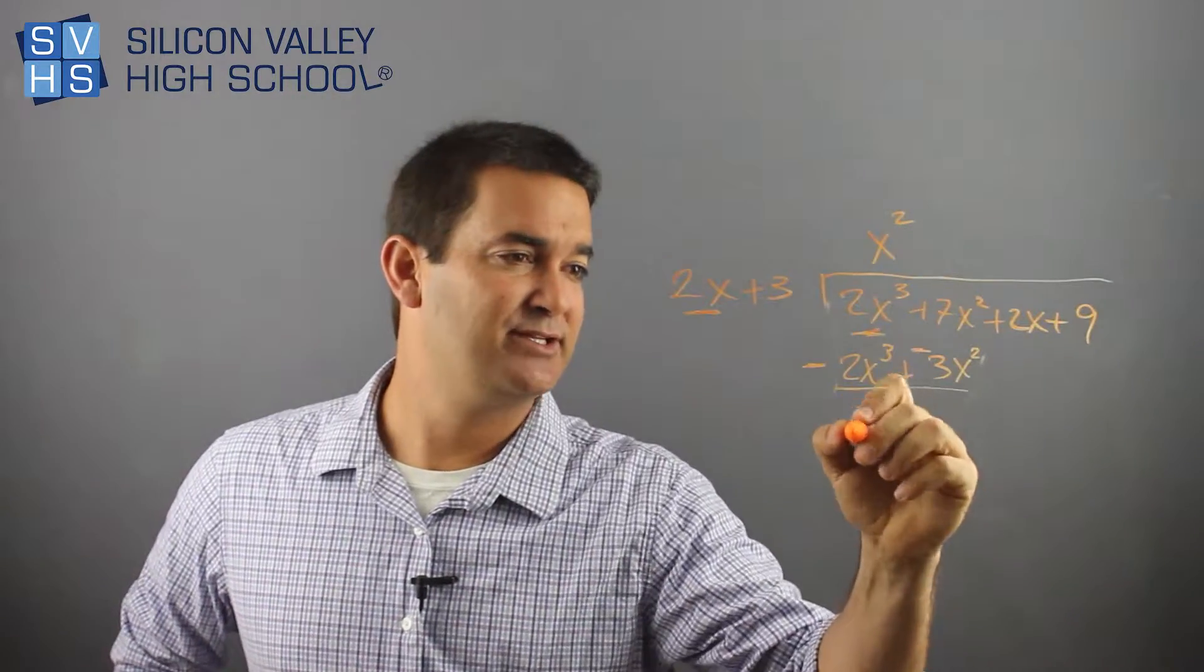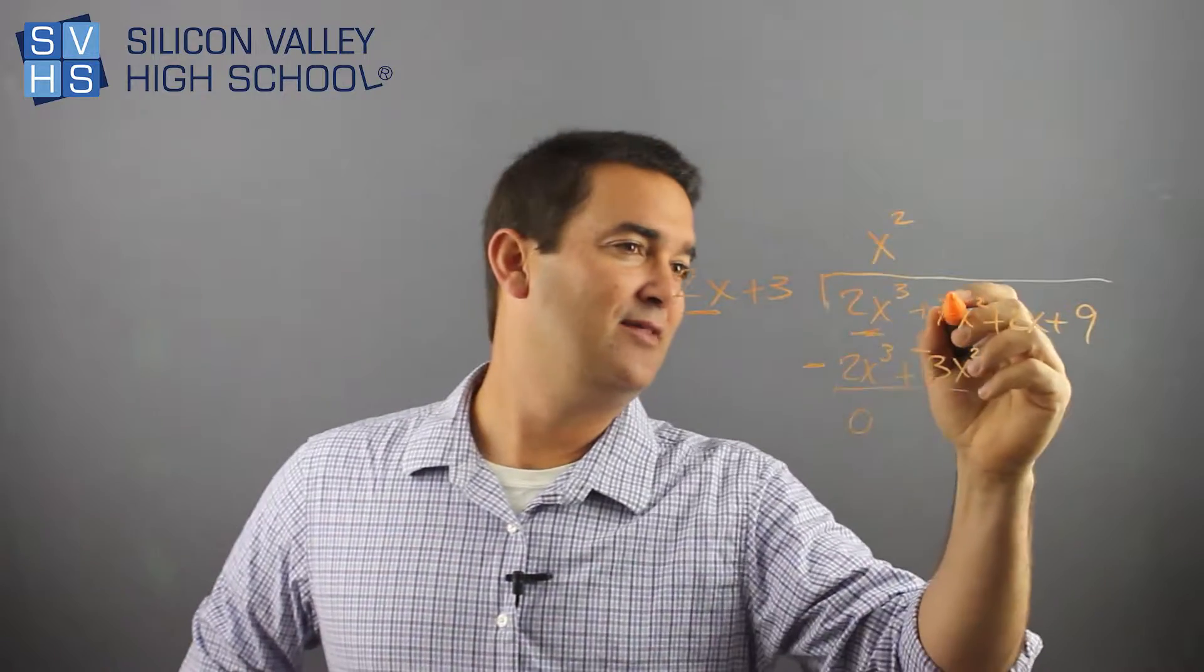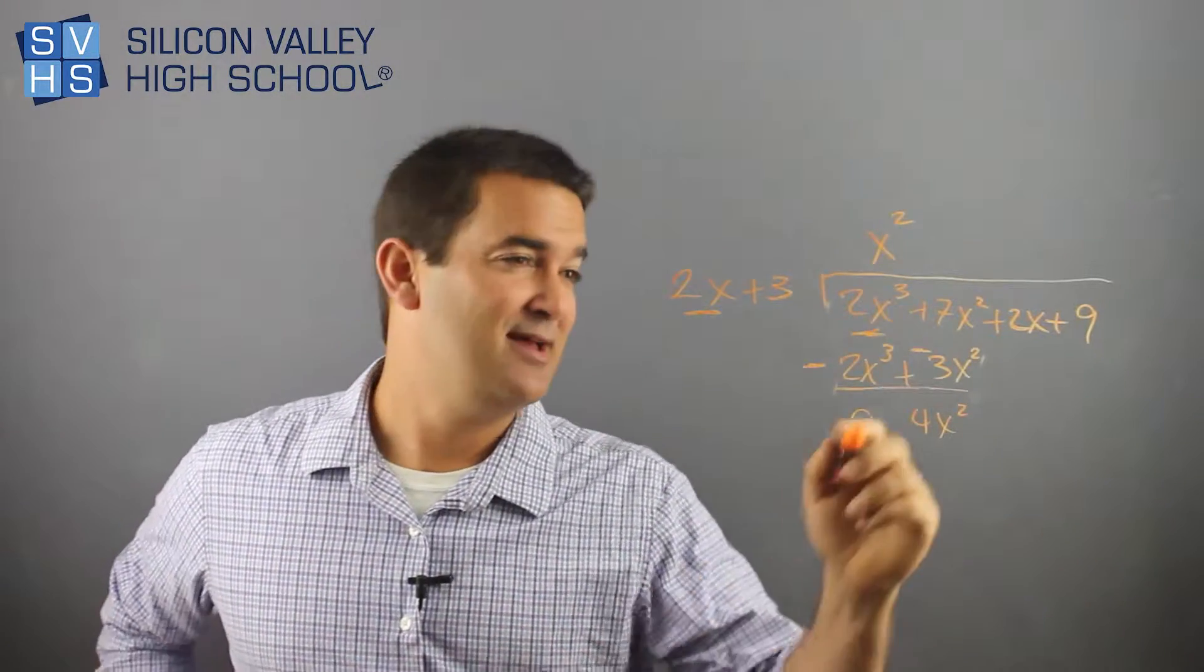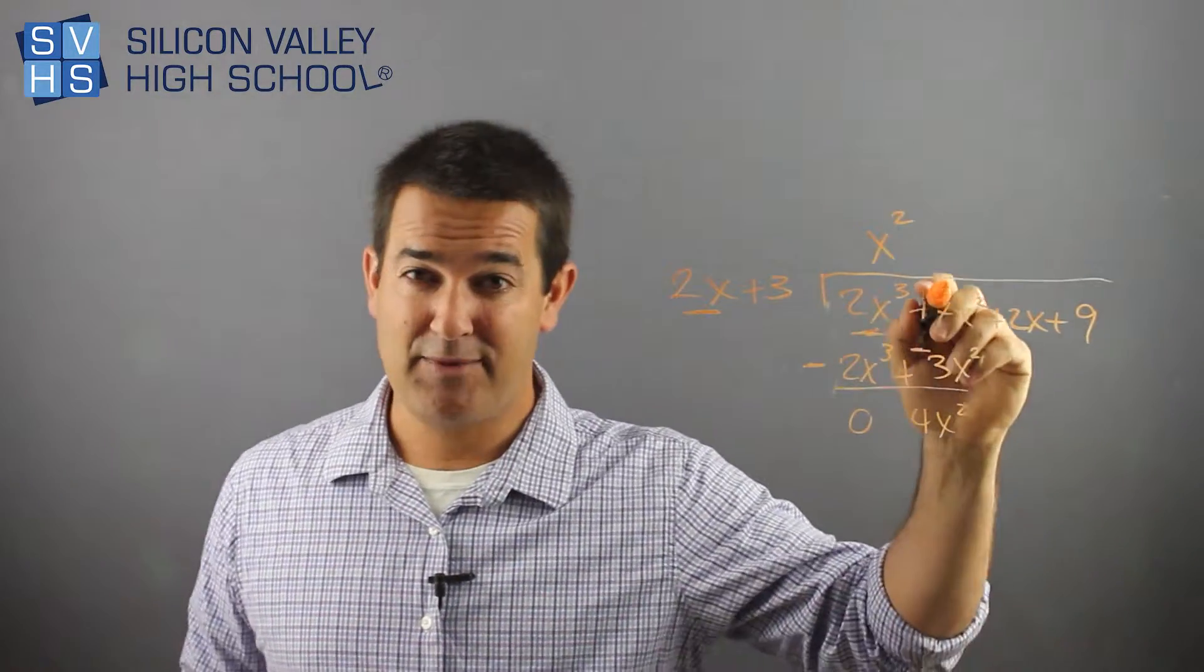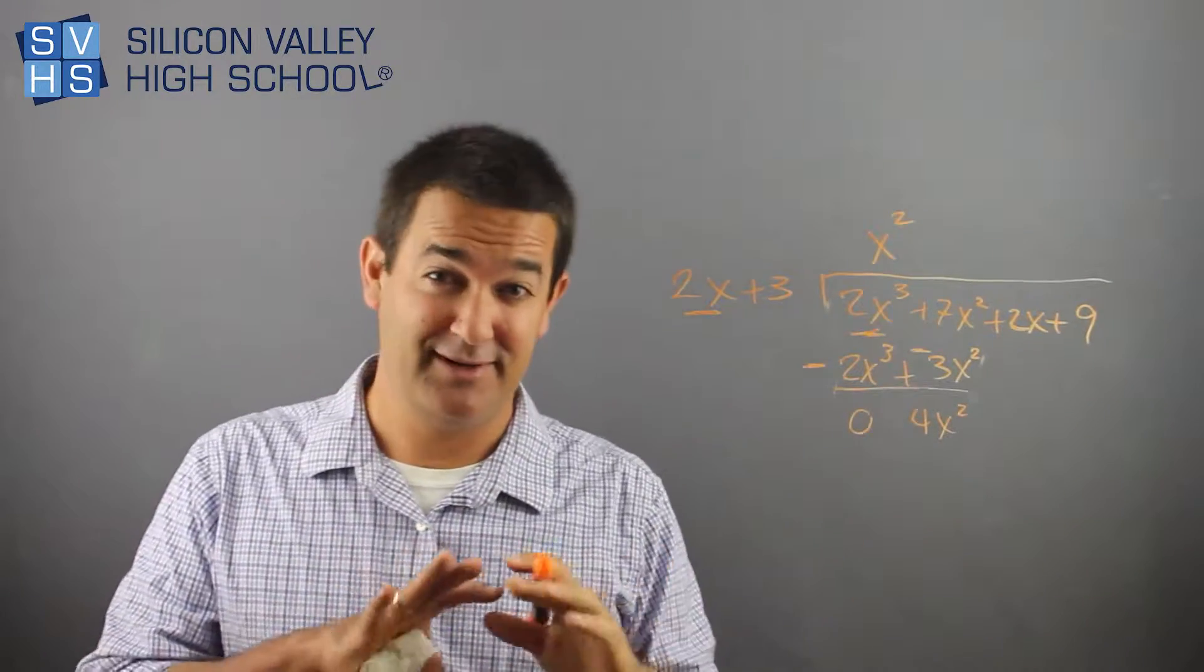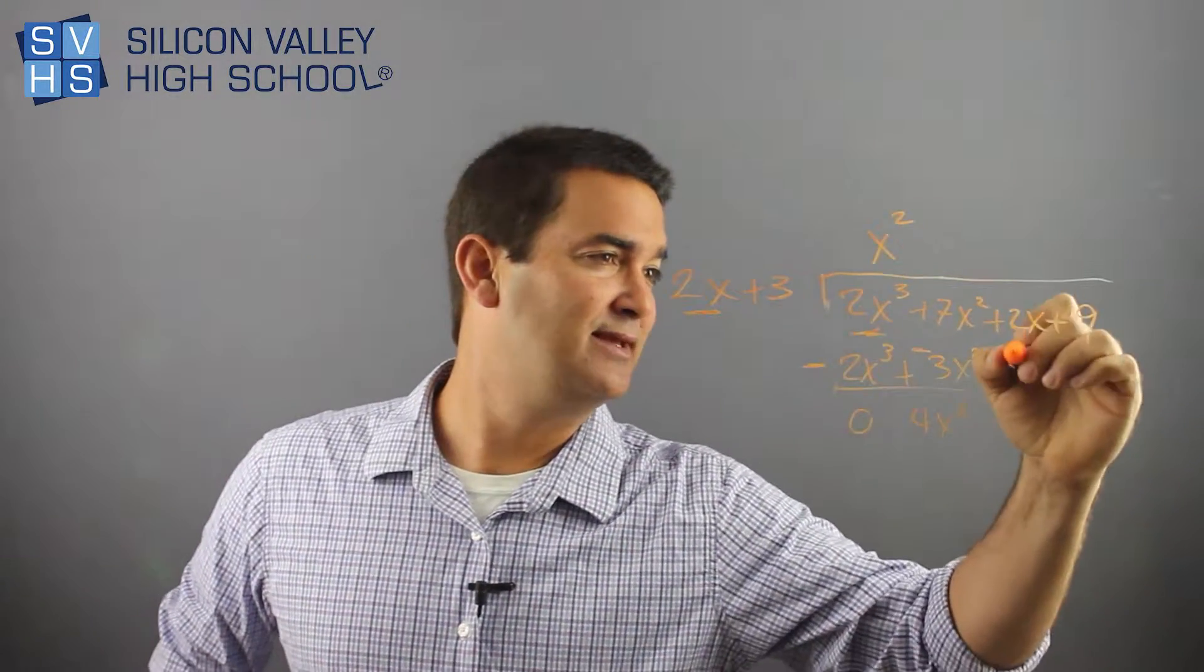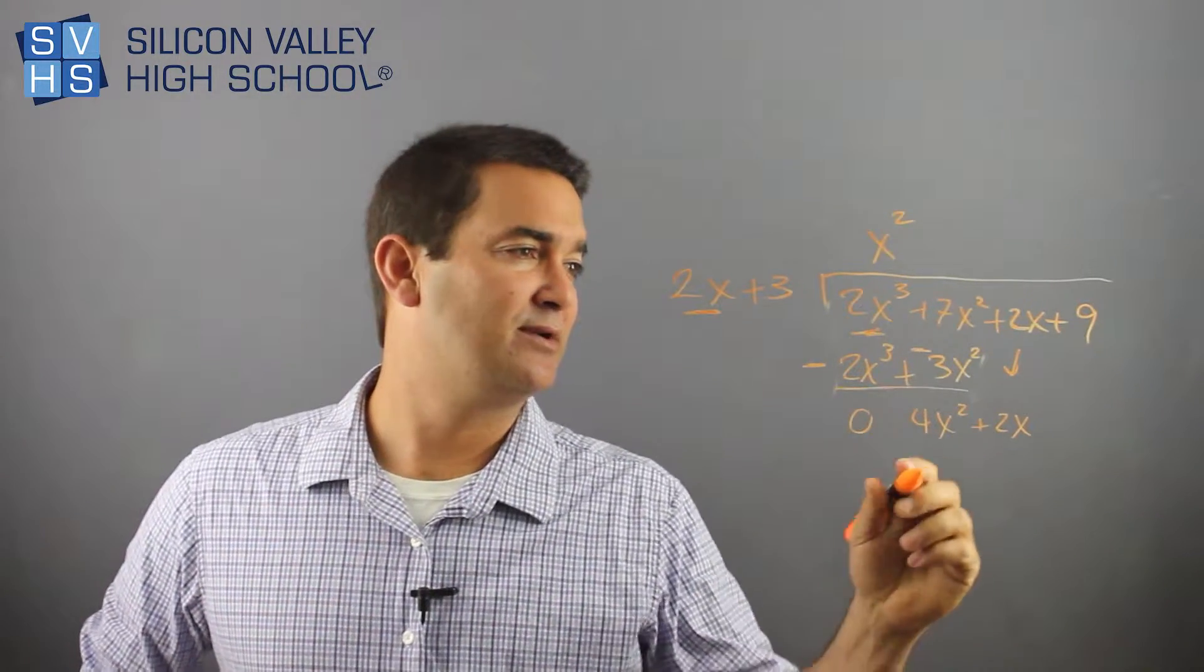So now, oh, these magically disappear, which I know they did because I designed it to be that way. Now, these ones, 7x squared minus 3x squared is 4x squared. Little side note, if for some reason, and this does happen with these problems, if up here is like 7x squared and down here is 3x, remember, you can only subtract like terms. So if these exponents don't match, you cannot subtract them. You just write them next to each other. But this one, they do. Everything's cool. I'm going to carry down this guy plus 2x. I can leave the 9 for now.